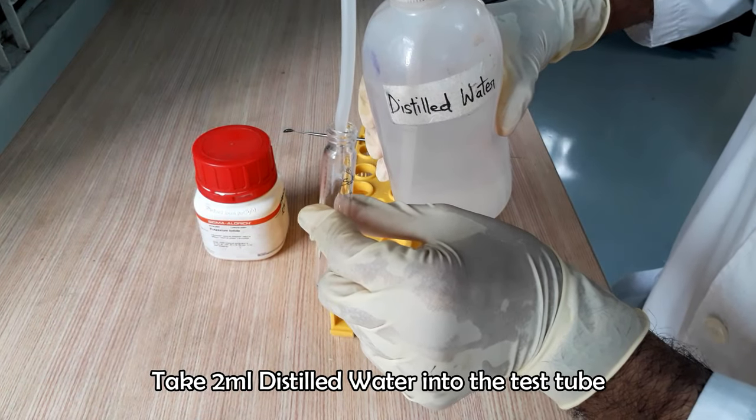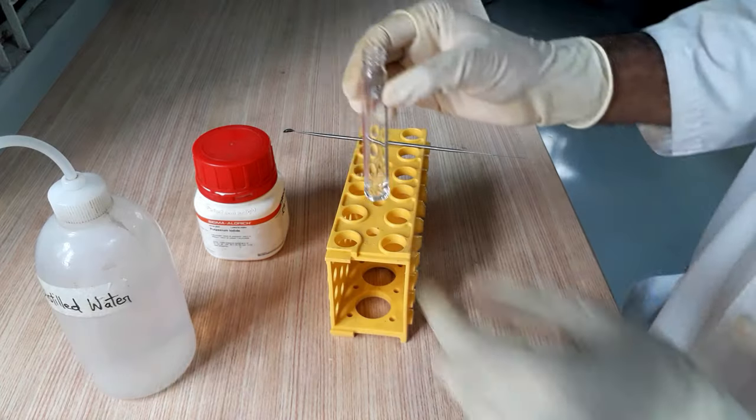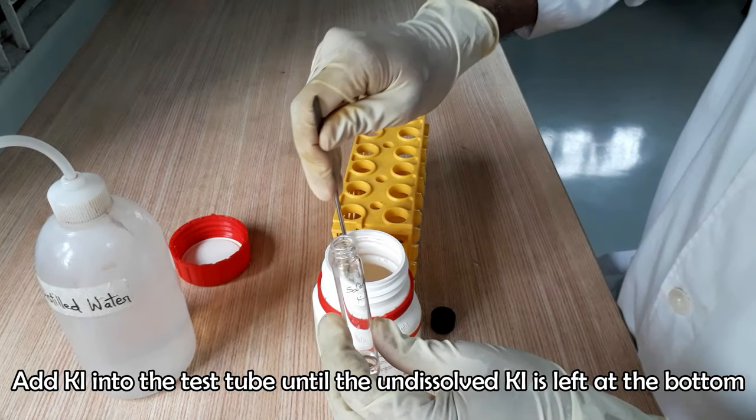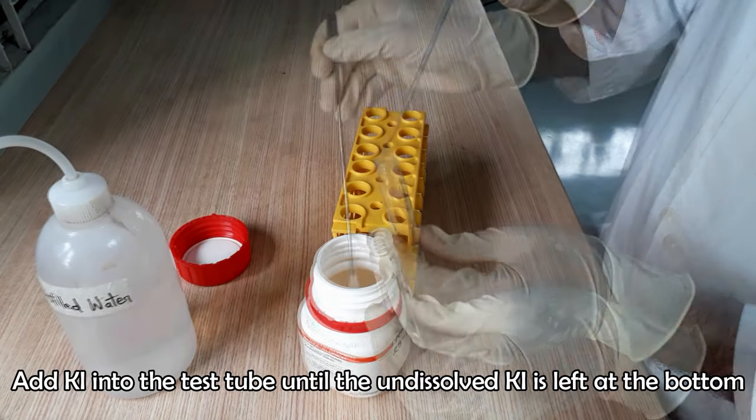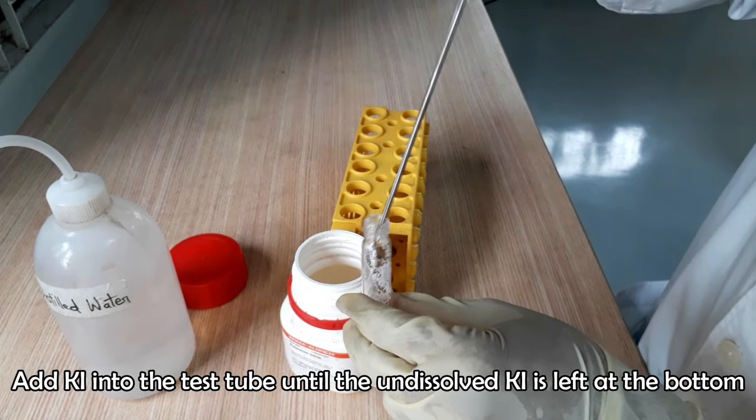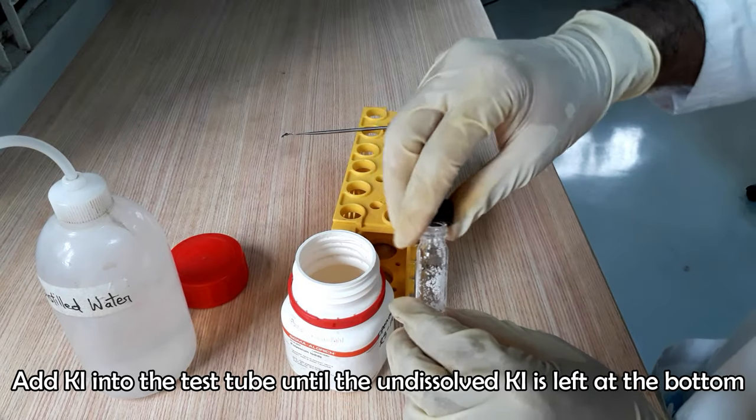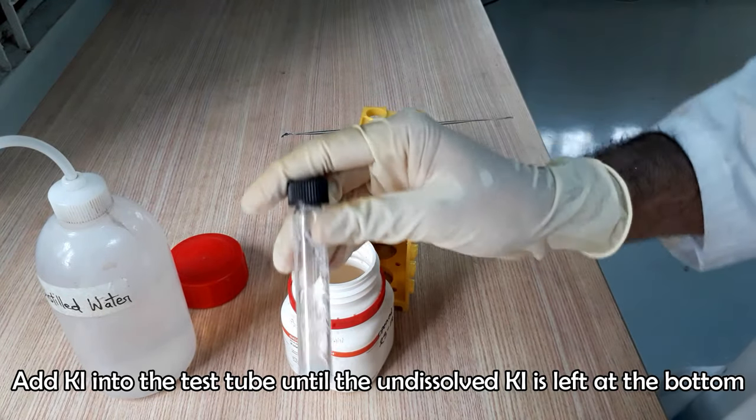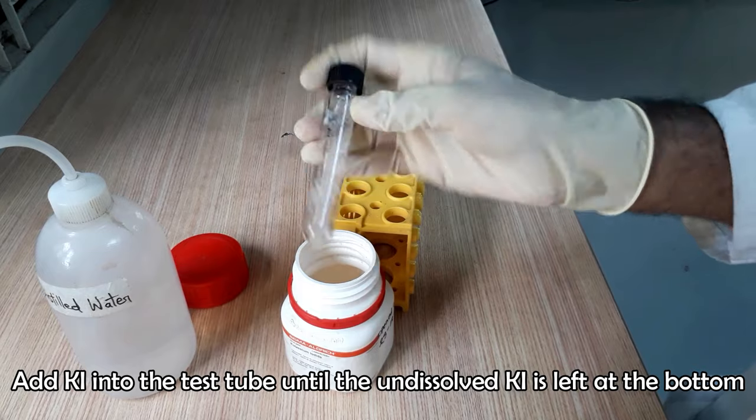Take 2 ml of distilled water in a pre-labeled glass test tube. Add potassium iodide crystal by a spatula and shake to dissolve the potassium iodide in water. Continue adding potassium iodide until the sediment of the potassium iodide is left in the bottom of the test tube.